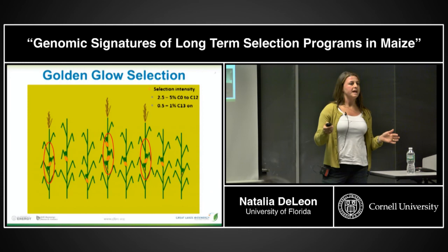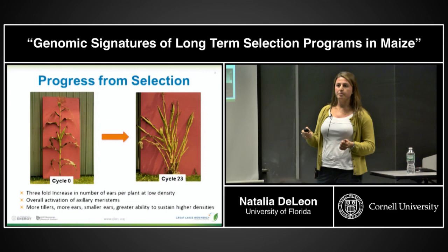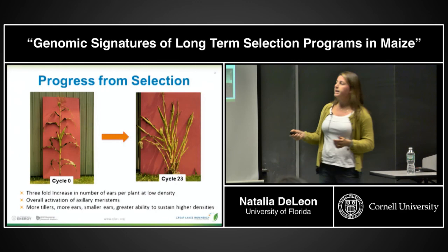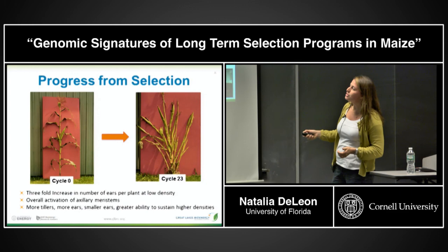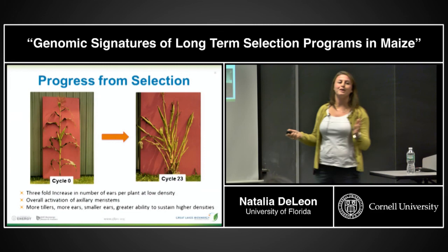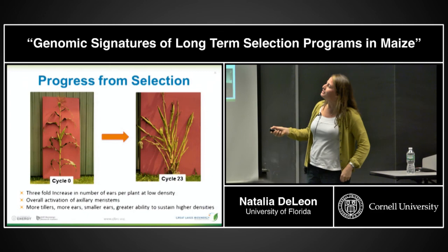The changes we have seen in this population are tremendous. A typical plant from Cycle 0 of the Golden Glow population might have one or two ears. An S1 out of Cycle 23 has 22 ears — we wanted one with 23 but couldn't find it. This plant was stripped of all its leaves to show the 22 ears clearly; the changes in morphology are really extreme.